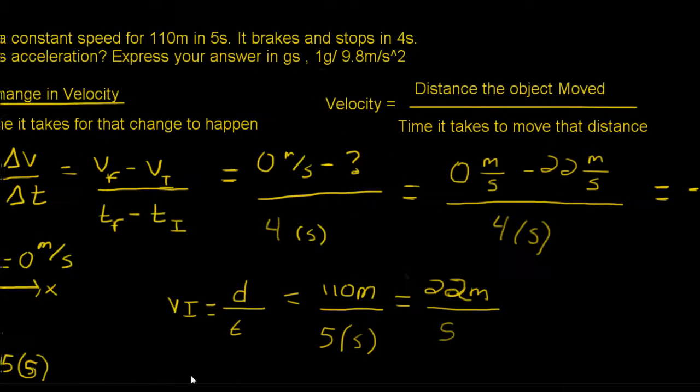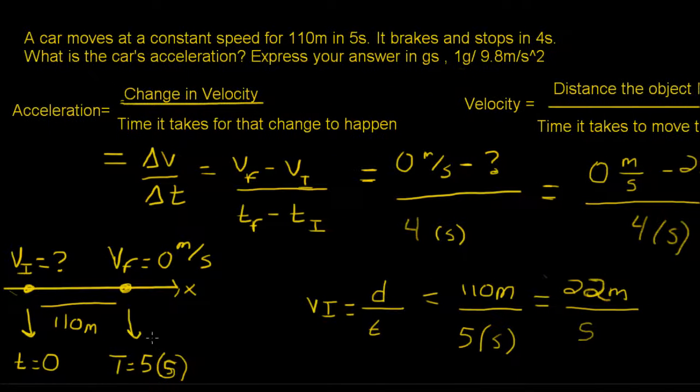Okay, let's get started by looking at our problem. A car moves at a constant speed for 110 meters in 5 seconds. It breaks and stops in 4 seconds. What is the car's acceleration? Express your answer in g's, where 1g is 9.8 meters per second squared, which is really just the acceleration due to gravity.